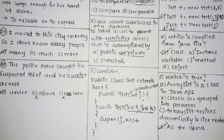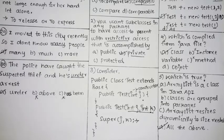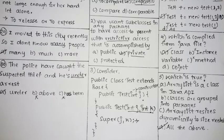In this video we completed the English communication test questions asked in GSPAN and covered around five programming MCQs. In the next video we shall cover the remaining five programming MCQs, the coding question, the logical reasoning part, and the quantitative aptitude questions. Thank you friends for watching — do subscribe to the channel for more updates.